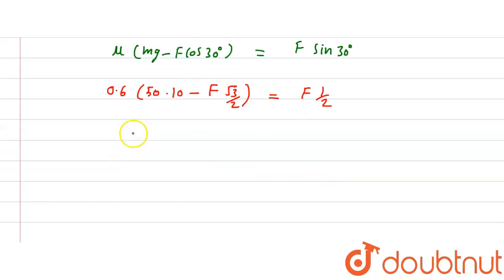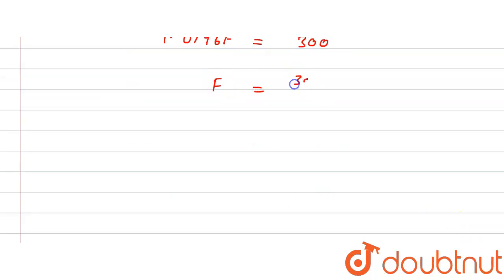So here we calculate, this term will become 300 minus 0.5916F equals 0.5F. Now calculating, 1.0196F equals 300. Now F equals 300 upon 1.0196, and here it is equal to 294.2 newton.